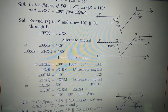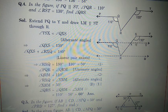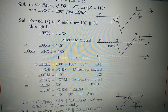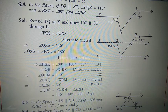We extend PQ parallel up to point Y, because PQ is parallel to ST as given. We draw a line LM through R parallel to PQ — so PQ is produced to M/Y and LM is drawn parallel to it. Since ST is parallel to PQ and PQ is parallel to LM, all three lines are now parallel to each other.